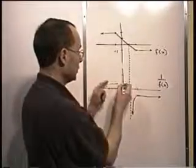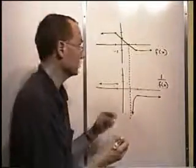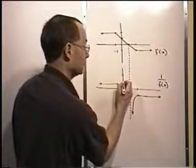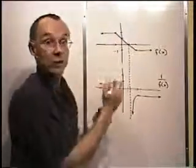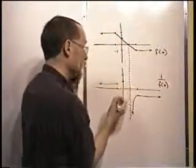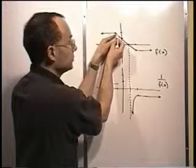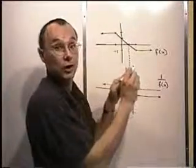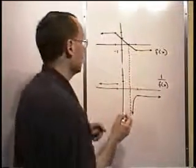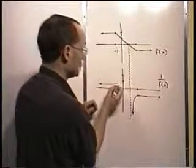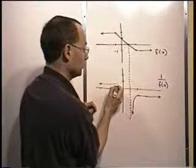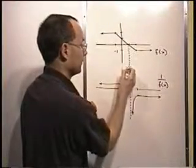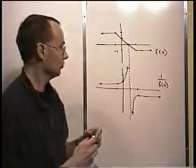There's an invariant point where the y value is 1 — that point won't move. Then we see smaller and smaller y values, so the reciprocals become larger and larger numbers, and the graph roars up to the vertical asymptote. And there we have our completed reciprocal graph for this piecewise function.